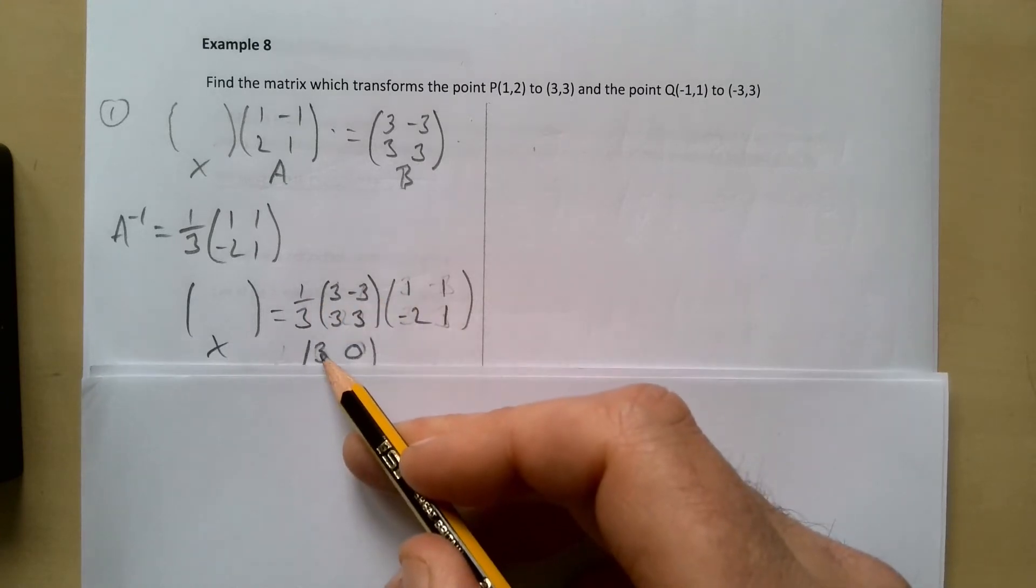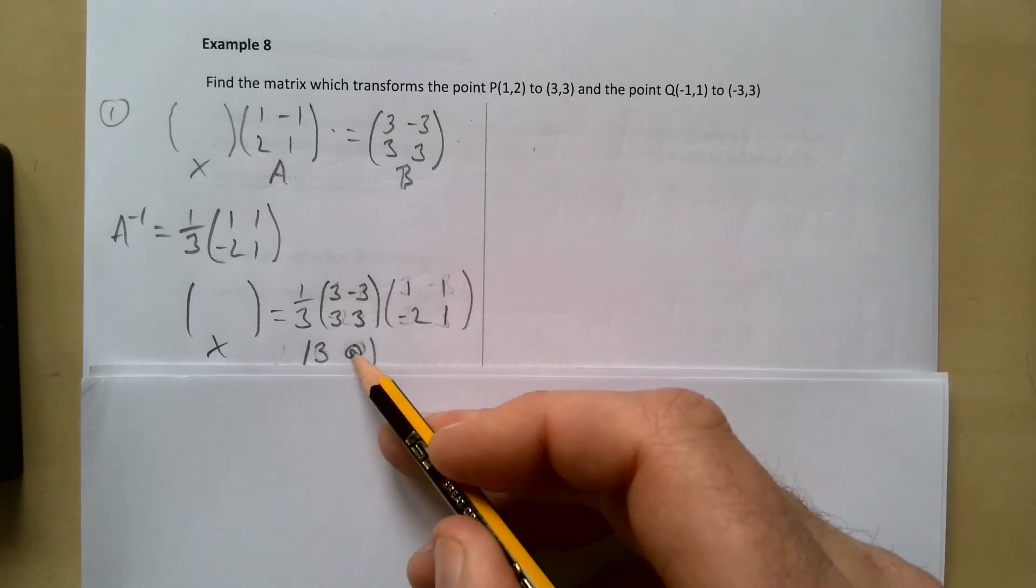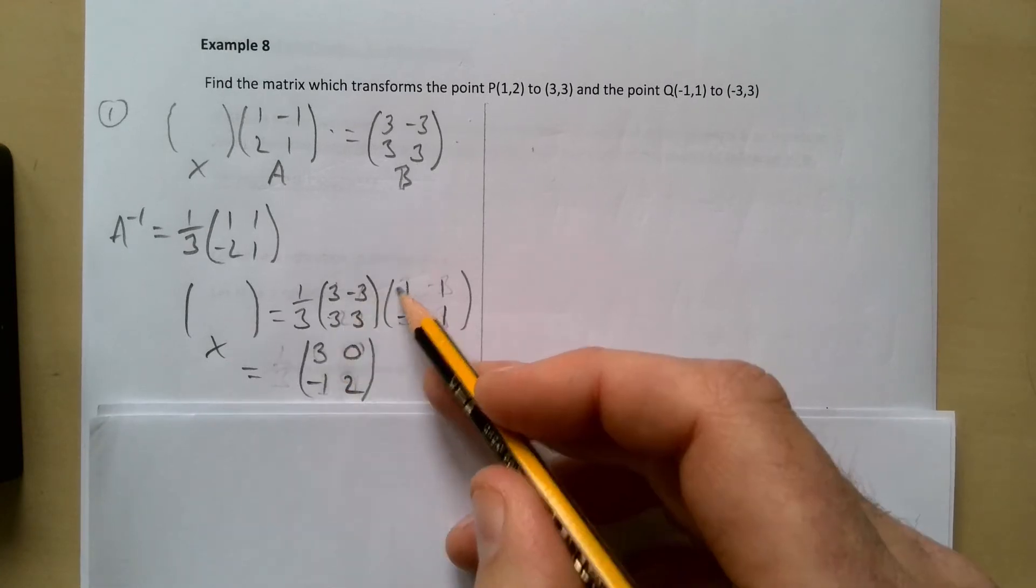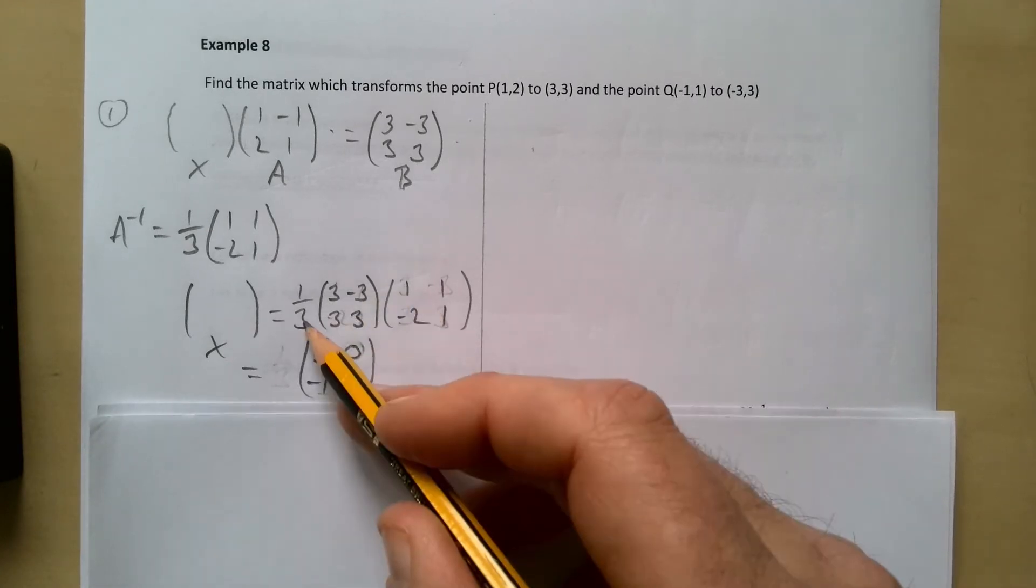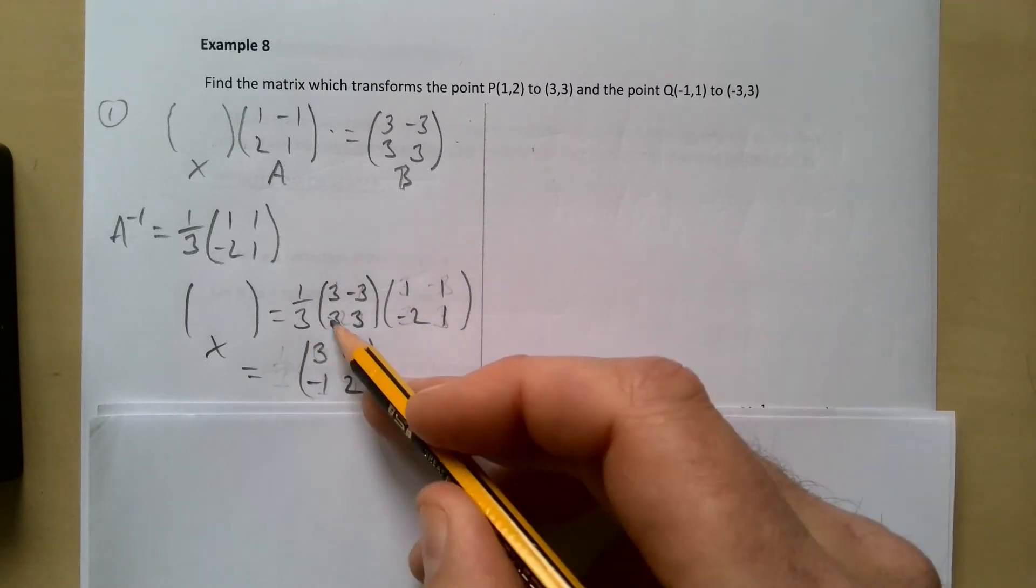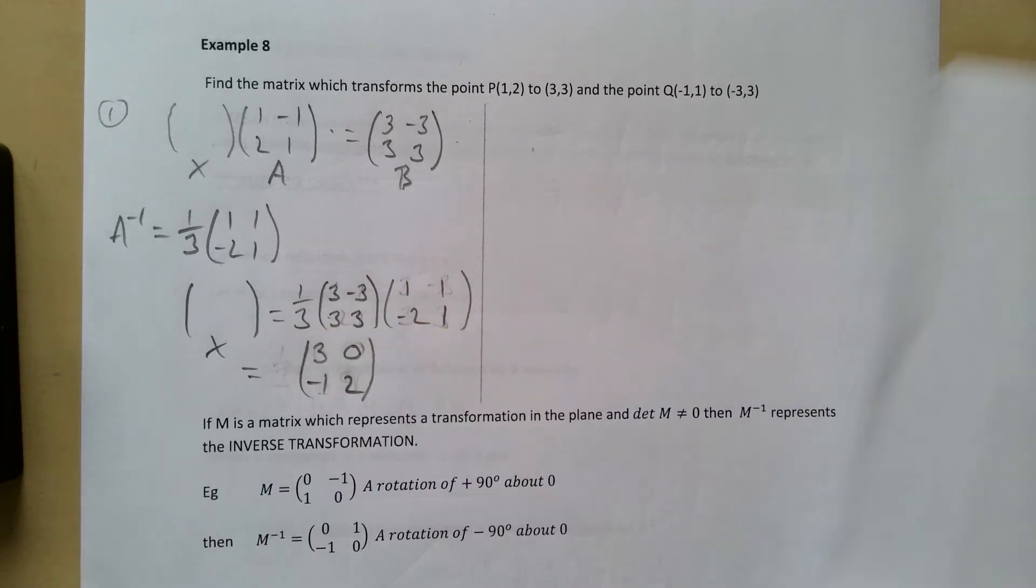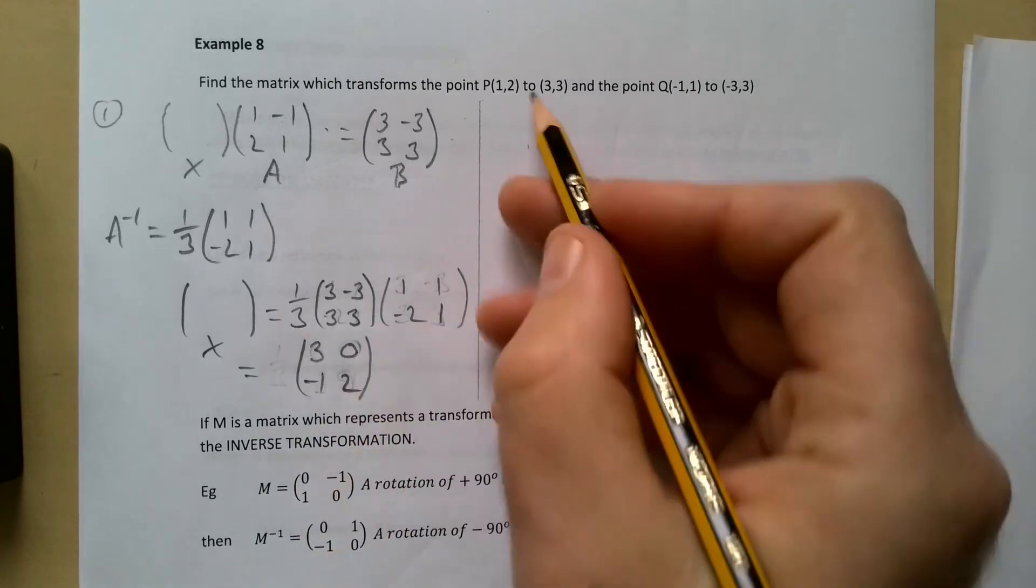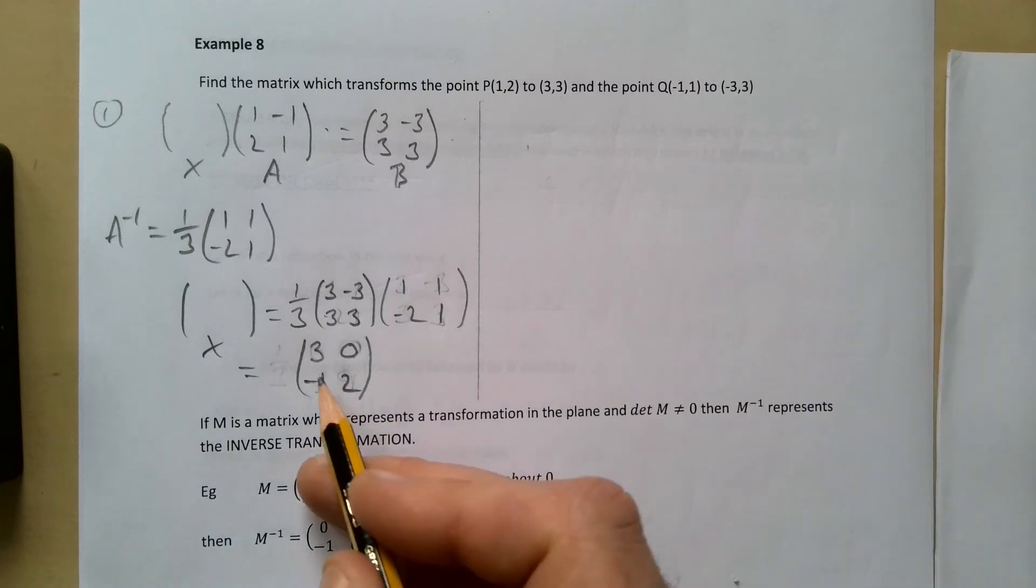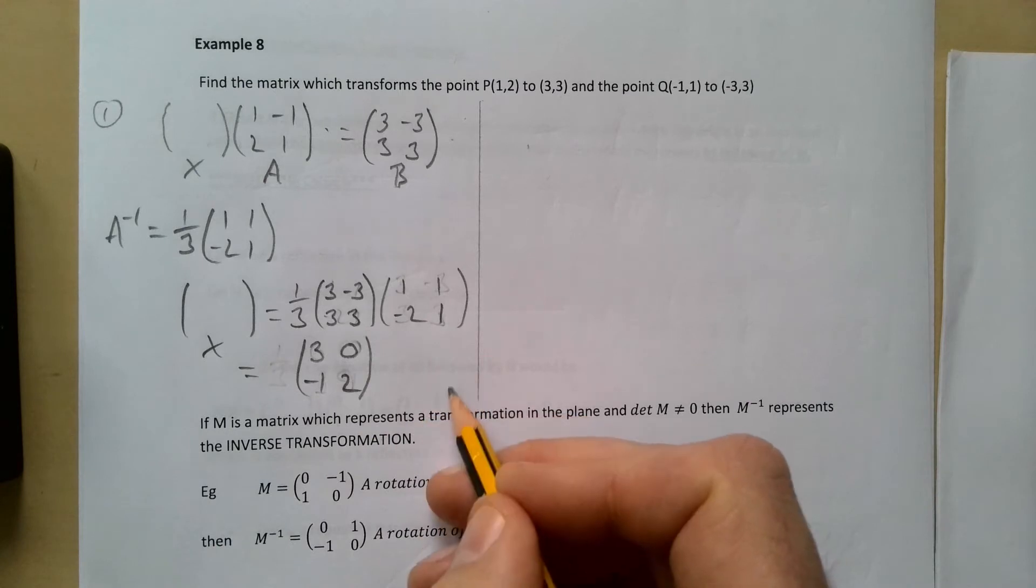3 plus 6 is 9 and a third of that then is going to be 3. 3 times 1 is 3 minus 3 times 1 is minus 3, so that gives me 0. For this one here, 3 minus 6 gives me minus 3 divided by 3 is minus 1. And then for this last one, this row times this column is 3 plus 3 is 6 divided by 3 is 2. So the matrix that is going to change (1,2) to (3,3) and (-1,1) to (-3,3) is this matrix here.